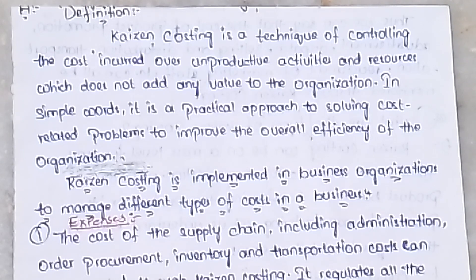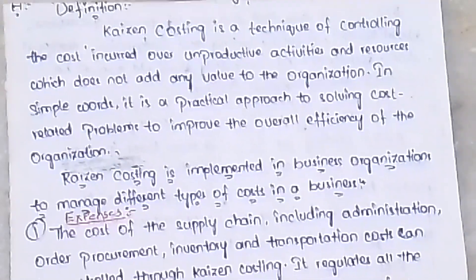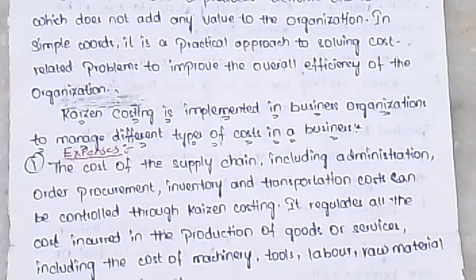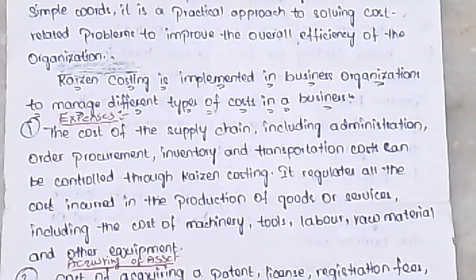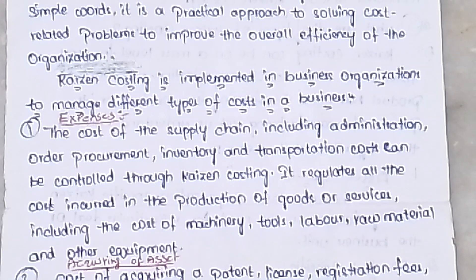There are different types of costs in the business. The first one is expenditure. The cost of supply chain, including administration, order procurement, inventory, and transport cost, can be controlled through Kaizen Costing.